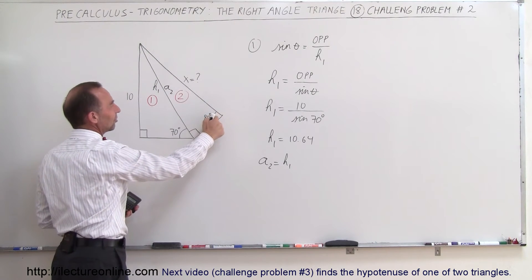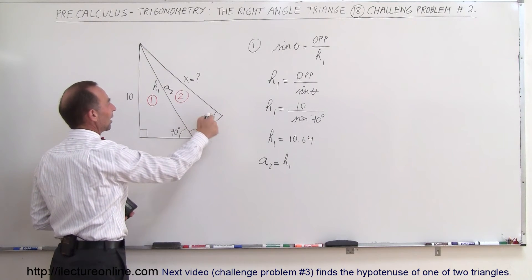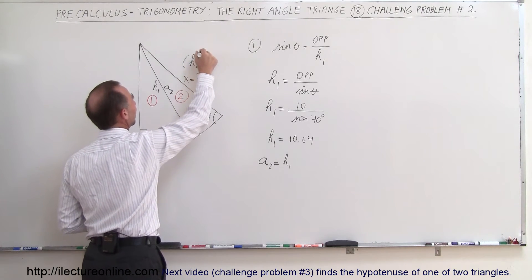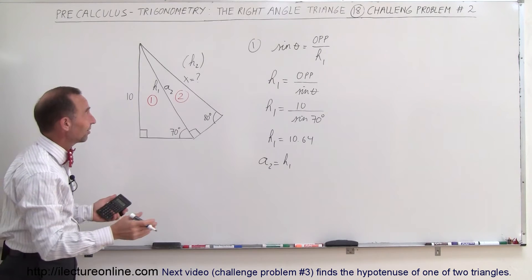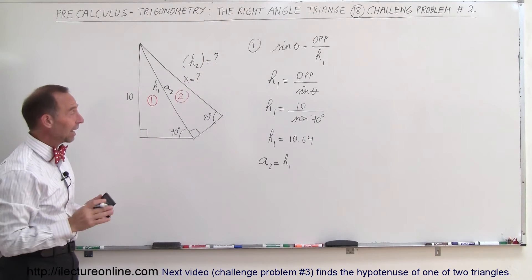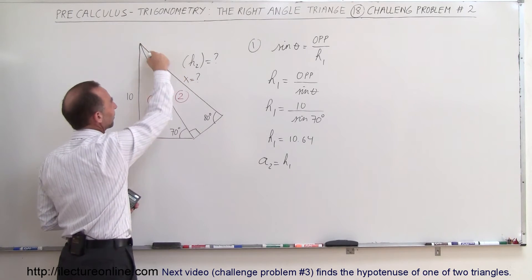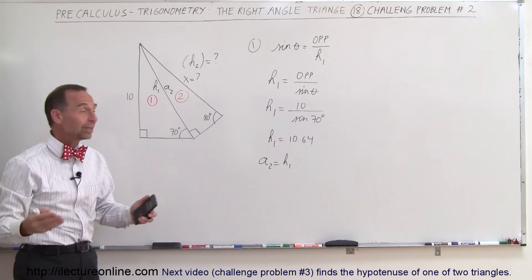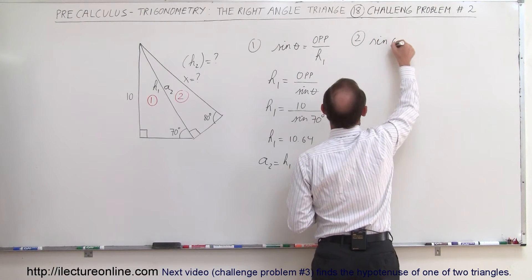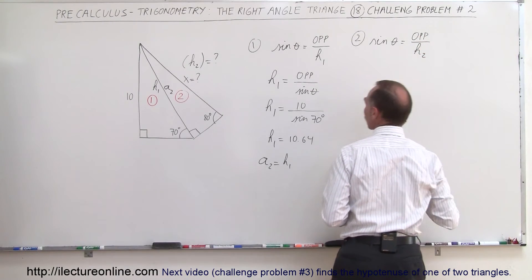X is the side adjacent to this angle. A sub two is the opposite side to the angle, and x is the hypotenuse of triangle two — that's what we're looking for. We need a trigonometric identity which relates the opposite side to the angle and the hypotenuse. That again would be the sine. So for triangle number two, we use: sine of theta equals the opposite side divided by the hypotenuse two.